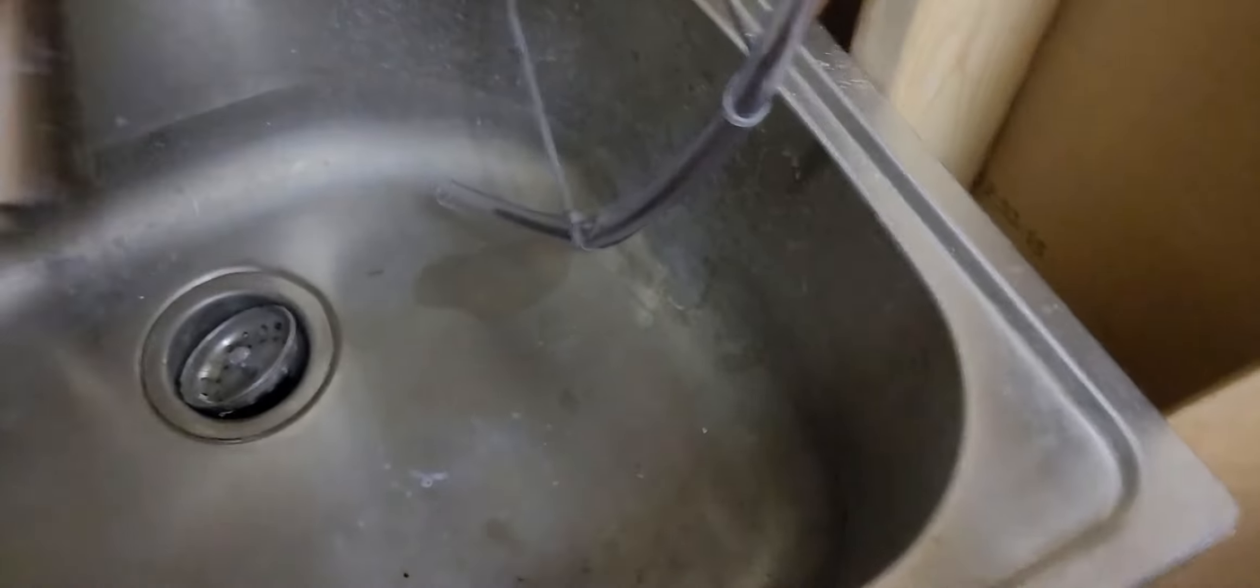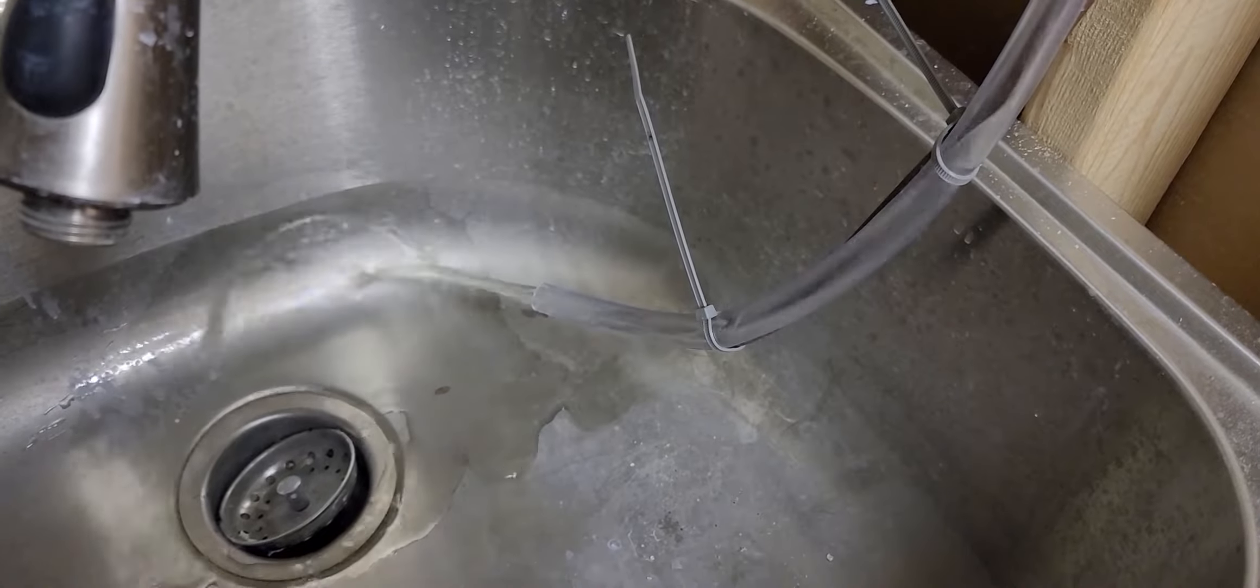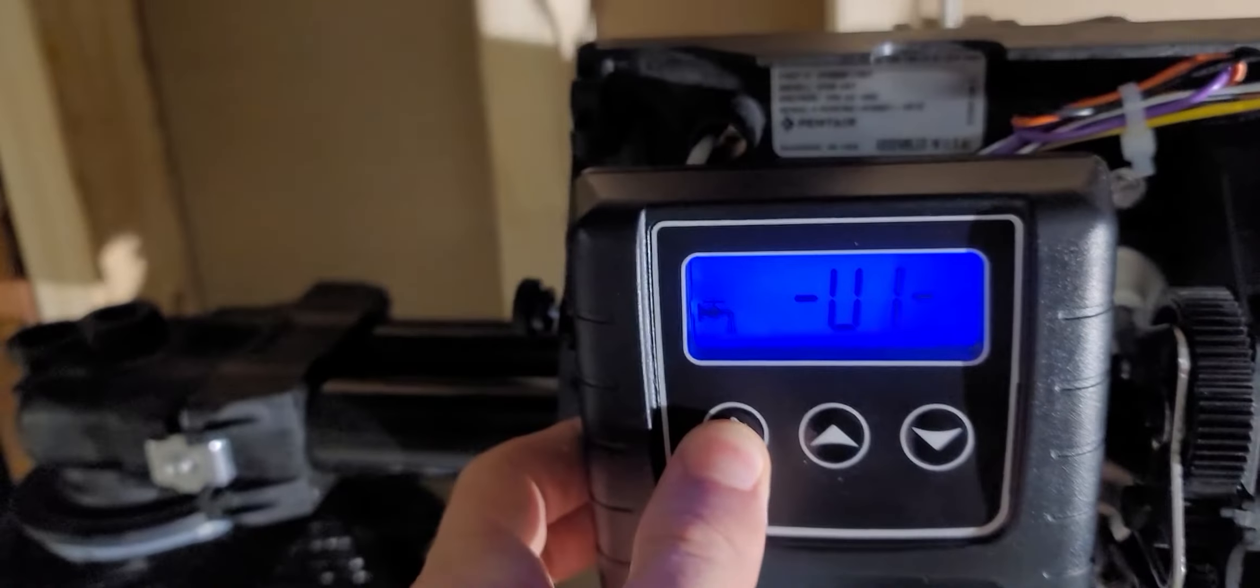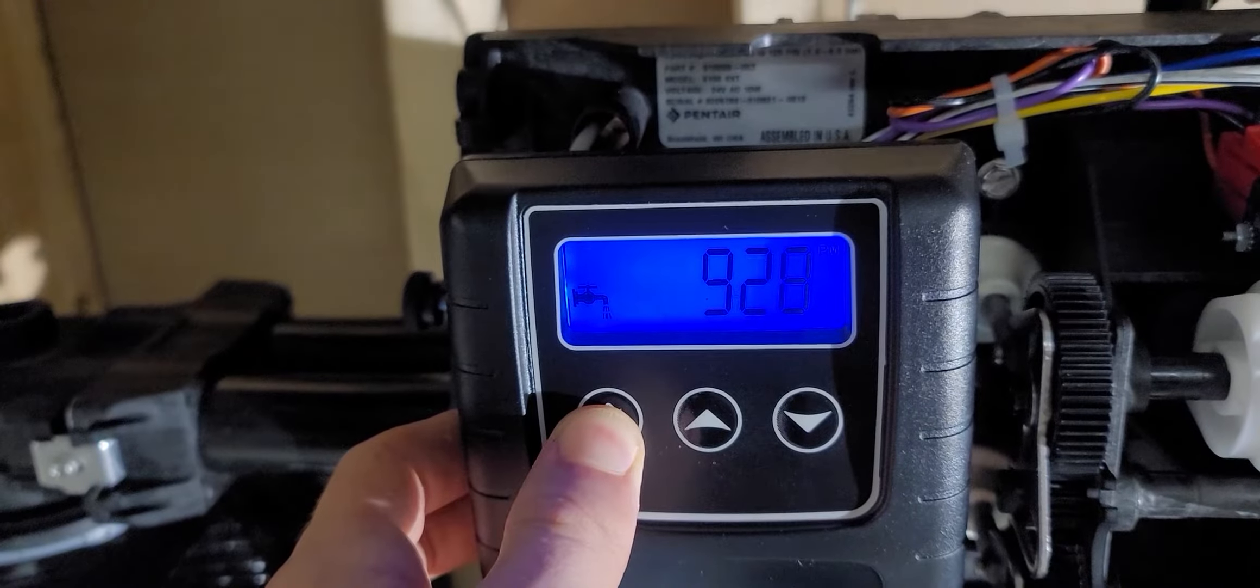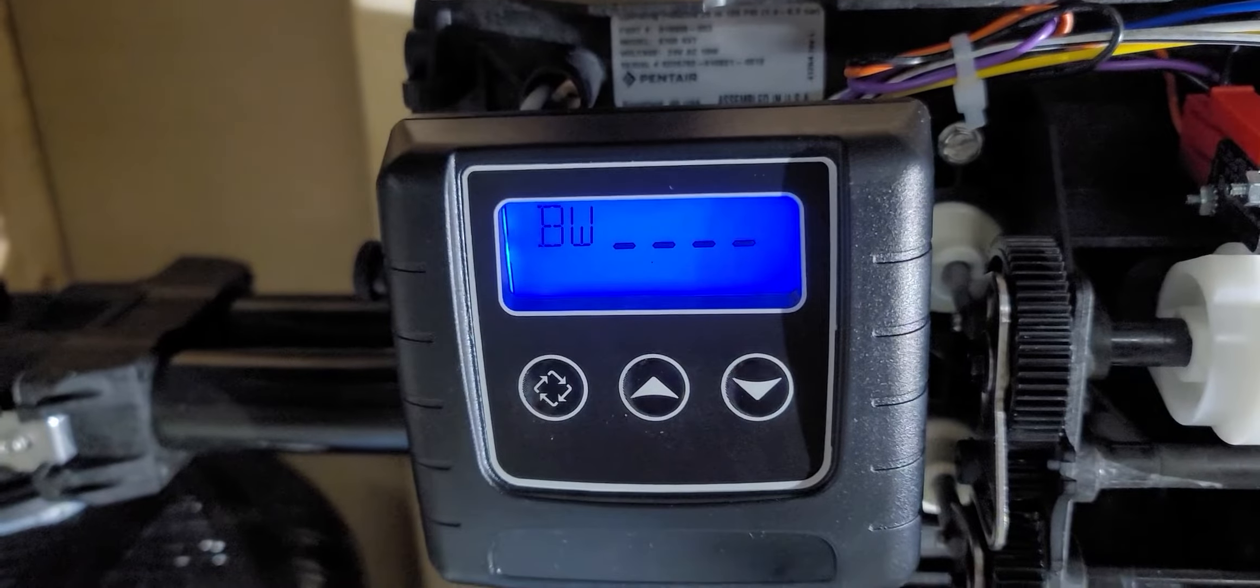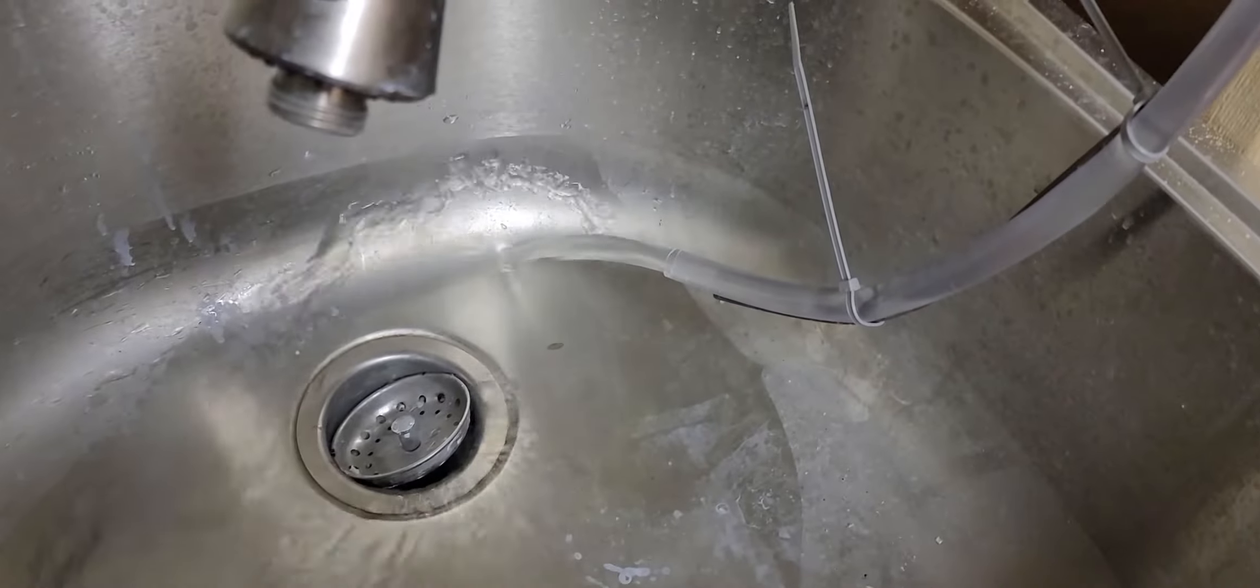So here is my second attempt at doing a manual regeneration. Here it is draining very nicely. And if you have the Fleck 9100 like I do, you're going to have to do it twice. So the first time it's going to do tank number one. And then the second time it's automatically going to switch to the second tank and regenerate the second tank.